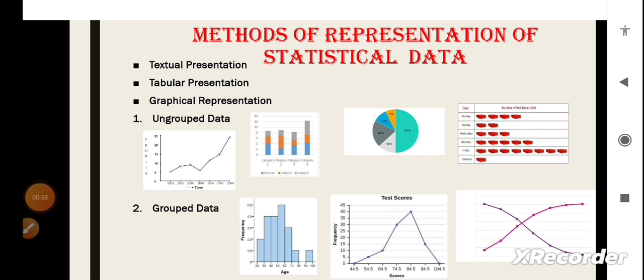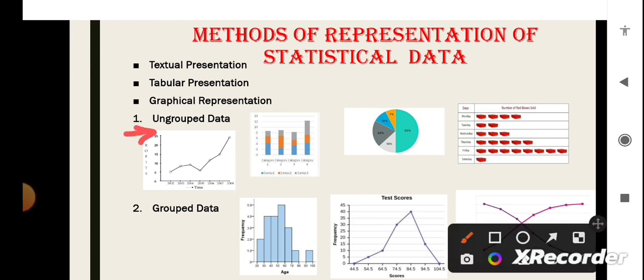There are two different modes to present the data graphically. For ungrouped data, i.e., the data which is in the raw form, we use line graphs, bar graphs, pie charts or pictographs. And, for the data which is grouped, i.e., these are organized into frequency distribution, we use histogram, polygon and ogives, i.e., cumulative frequency curve.